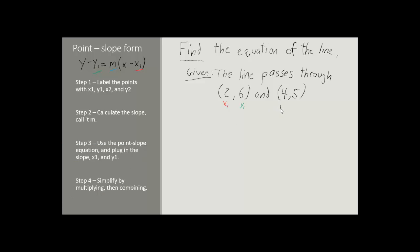For the other point, we will do the same thing. We'll label the x-coordinate as x2 and the y-coordinate as y2. Looking back at the equation, we already have y1 and x1 — they are 2 and 6. Now all we need is to find the slope, using the equation m equals y2 minus y1 over x2 minus x1.